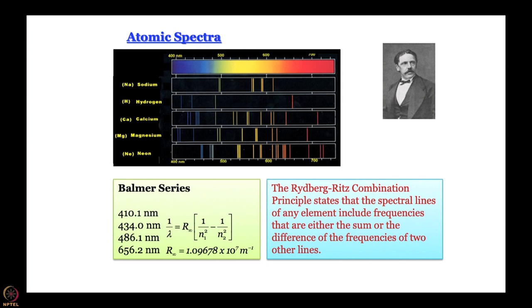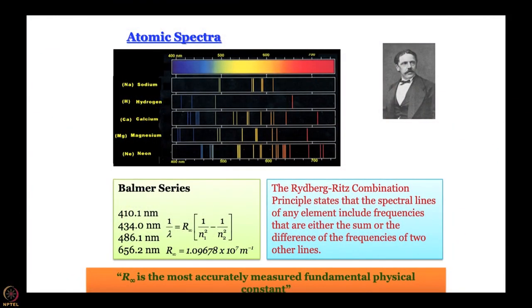It might sound ridiculous that so many decimal places are reported — generally when a student reports data like this we always ask whether they are sure their answer is correct to the last decimal place. Rydberg was sure. The experiment was done many many times and it was found that accuracy holds to that many decimal places. So the Rydberg constant was acclaimed as the most accurately measured fundamental physical constant.